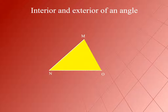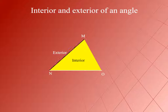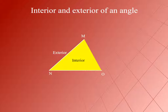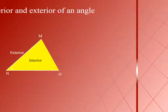In the figure shown here, the shaded part is the interior of the angle MNO, and the outside part of the angle MNO is the exterior of the angle MNO. The arms MN and NO form its boundary, on which points M, N, and O lie.